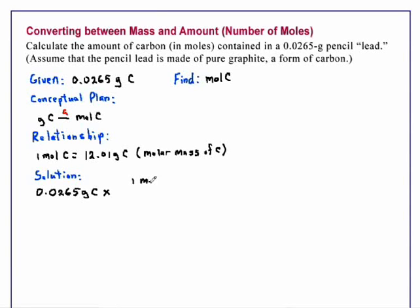So one mole of carbon has a molar mass of 12.01 grams of carbon. Grams of carbon cancel, leaving us with moles. And to the correct number of significant figures, our answer is 2.21 times 10 to the minus 3 mole of carbon.